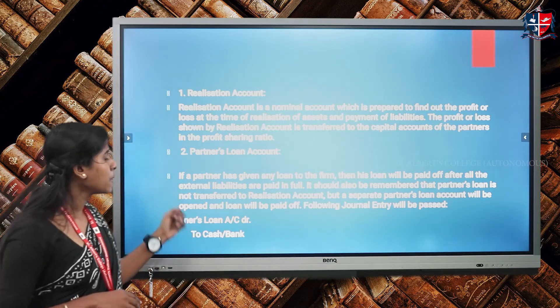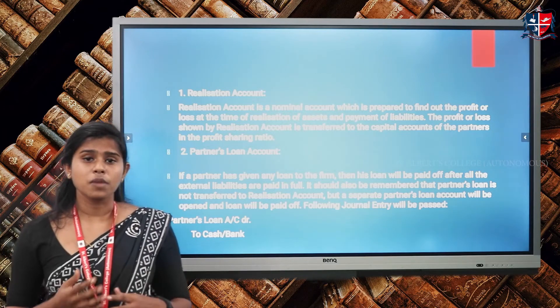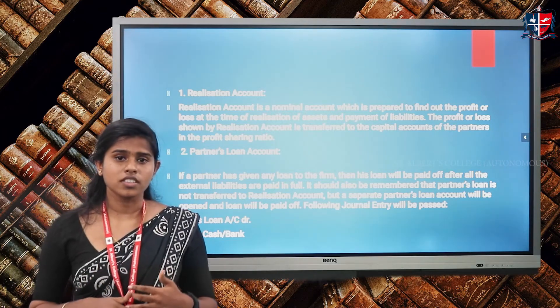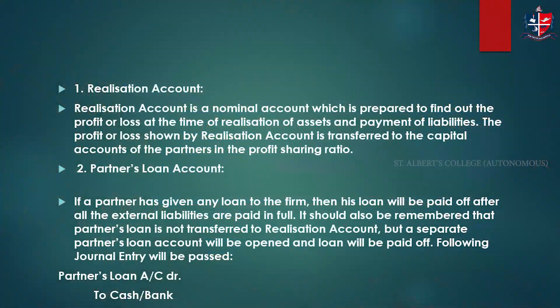Next is the partner's loan account, which is actually a liability to the organization. When a loan is received from a partner, it must be paid back on winding up. The entry when making payment to the partner is: debit partner's loan account, credit bank. This entry must be recorded in the books of the firm.